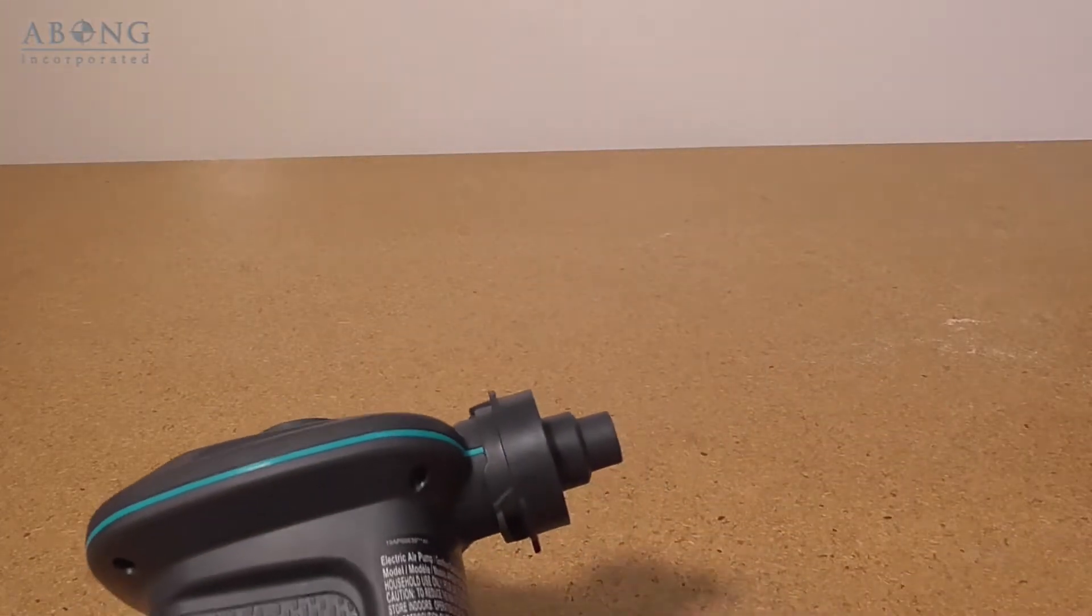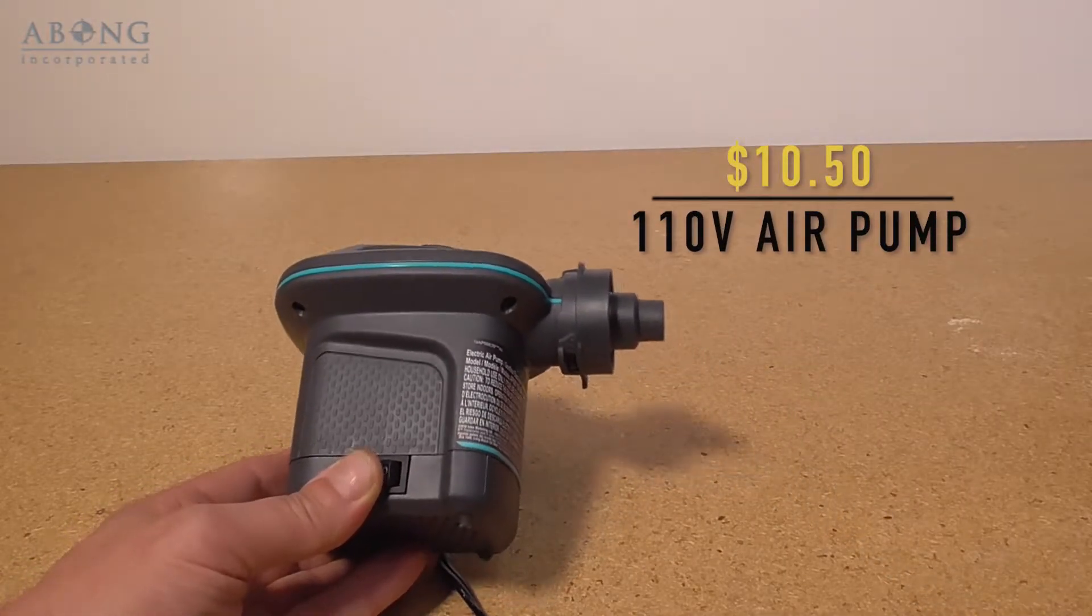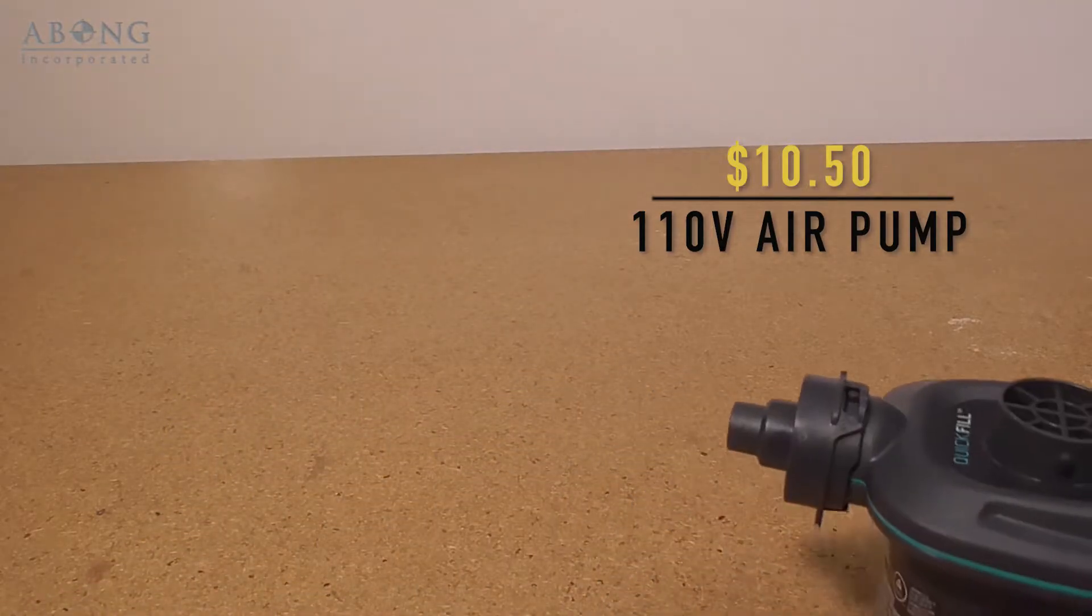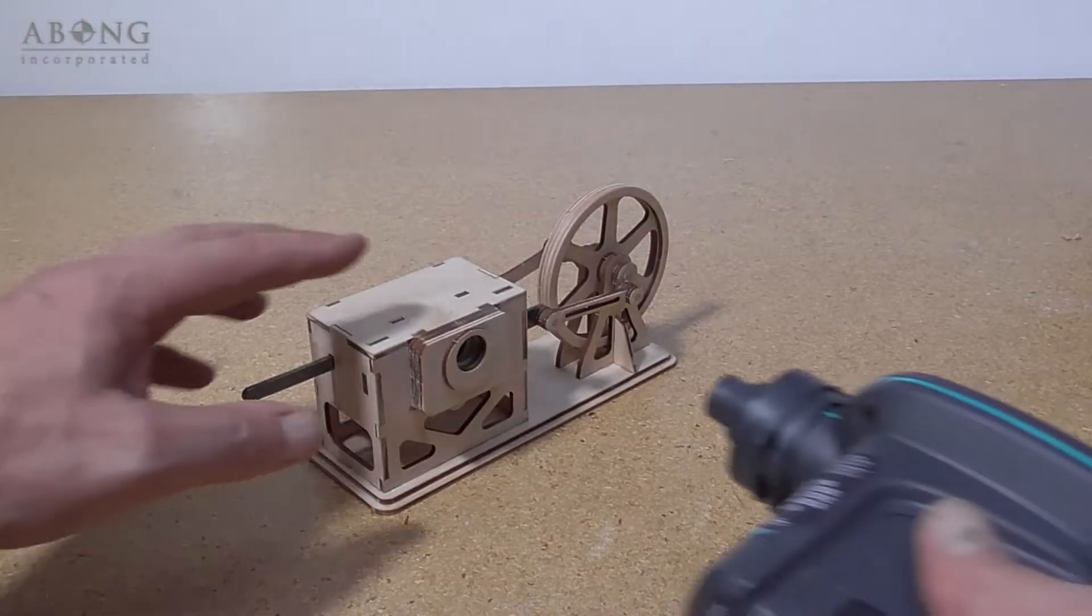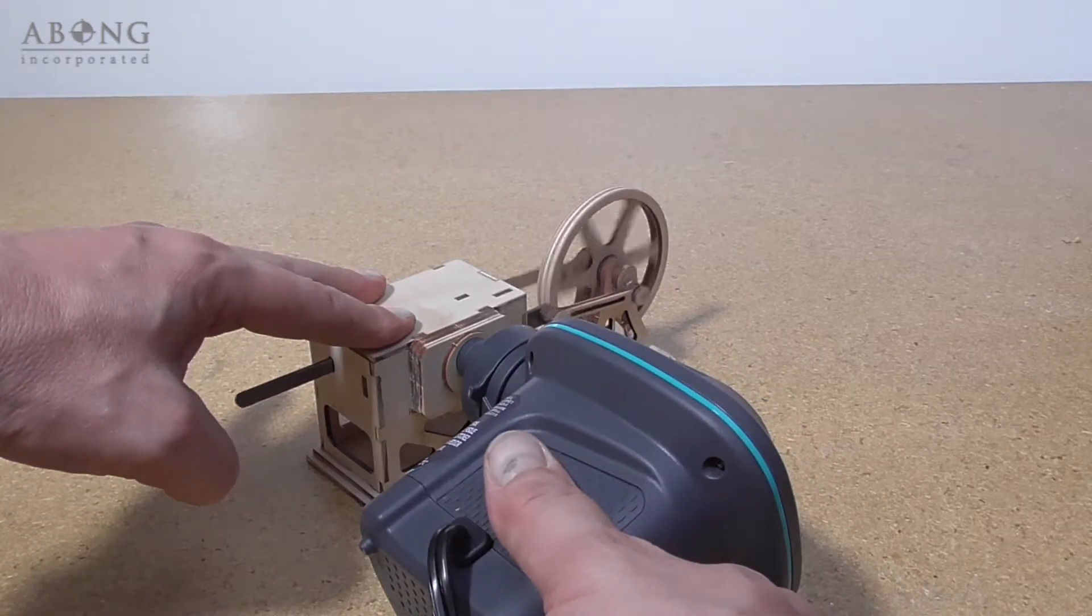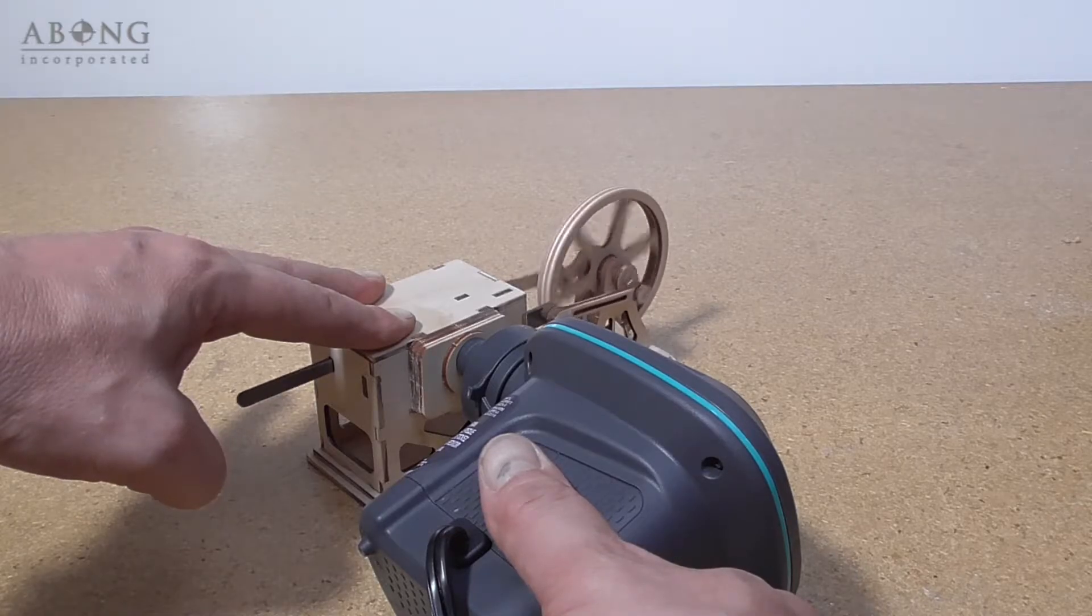One of the handiest sources of compressed air are the inflators used to blow up air mattresses and air toys. They cost between $10 and $40 and provide plenty of air to keep the wooden steam engine running. They do tend to be pretty noisy though.